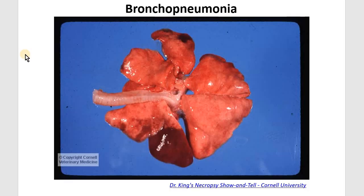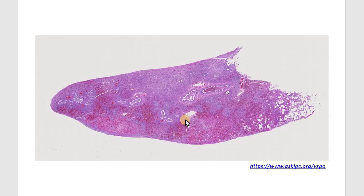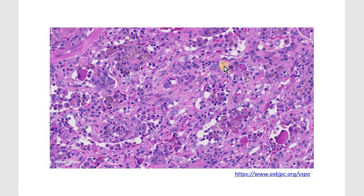A quick recap of last episode's bronchopneumonia associated with canine distemper: we can see multifocal areas of pulmonary consolidation and hemorrhage. In histopathology, we discussed large areas of necrotizing pneumonia and inflammation associated with hemorrhage and edema. At higher magnification, there are type 2 pneumocyte hyperplasia, and as discussed, morbilliviruses are typically associated with syncytial cell formation and the presence of intranuclear and intracytoplasmic inclusion bodies.